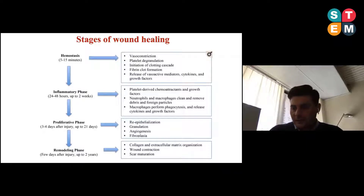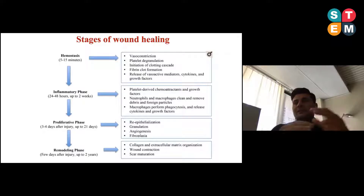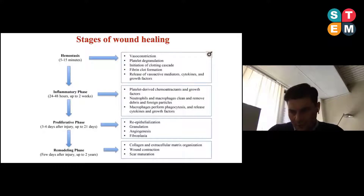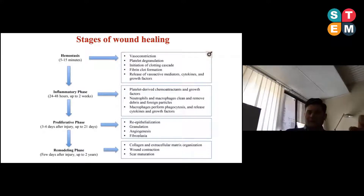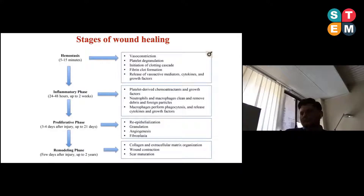The proliferative phase includes the formation of granulation tissue, angiogenesis, and fibroplasia. This is the fundamental step in which the continuity of skin is restored. Then we have the last phase — the remodeling phase — where collagen and extracellular matrix become reorganized, and we have wound contraction. This phase is theoretically the last phase of wound healing, needed for complete restoration of skin continuity and internal physiological structural organization.